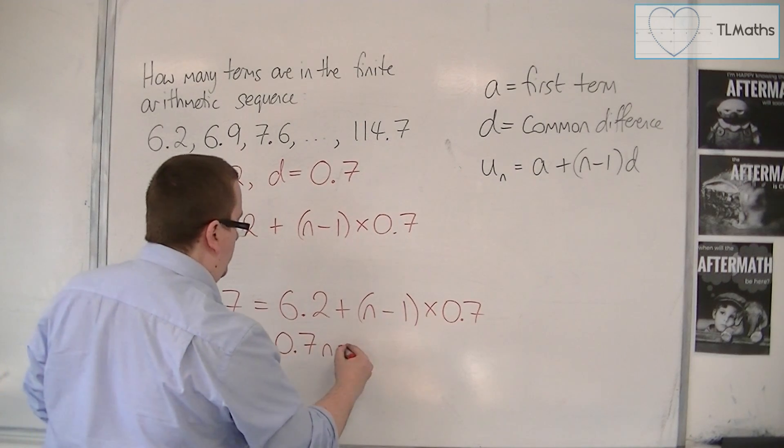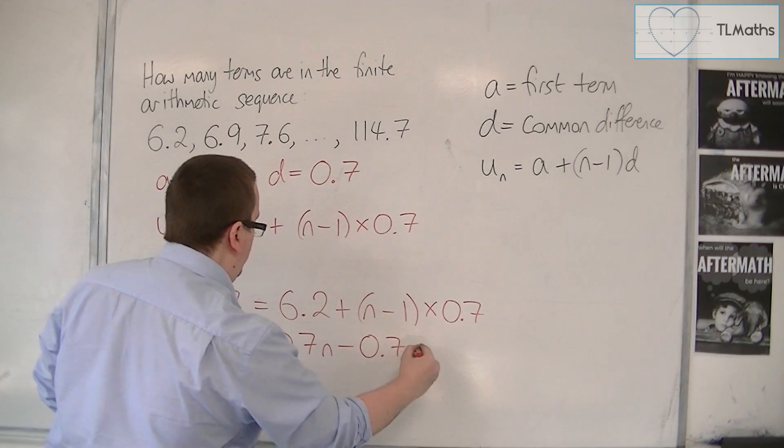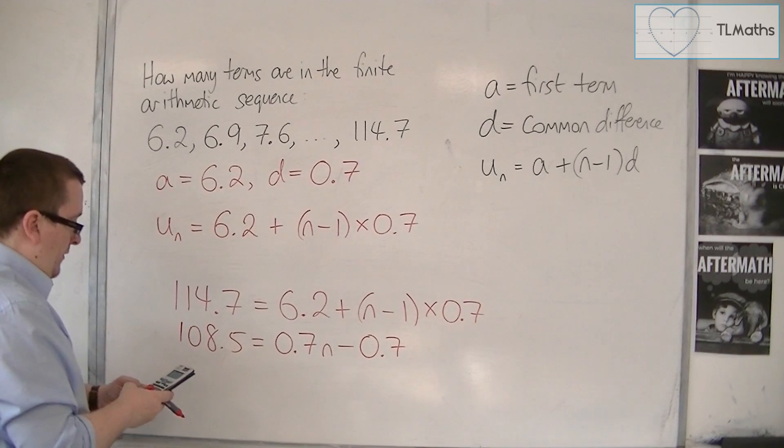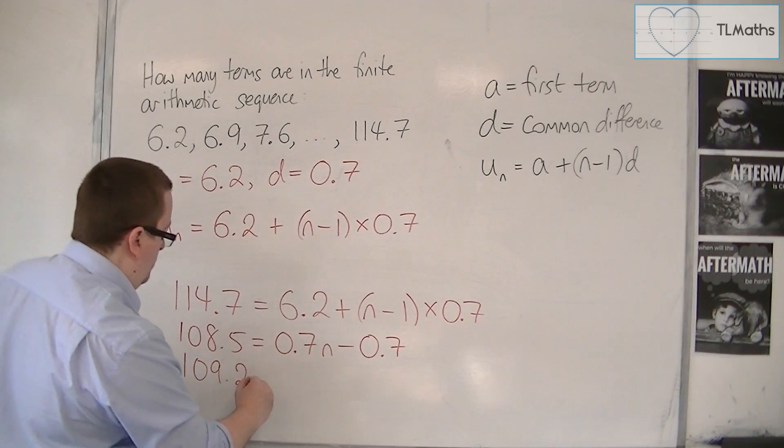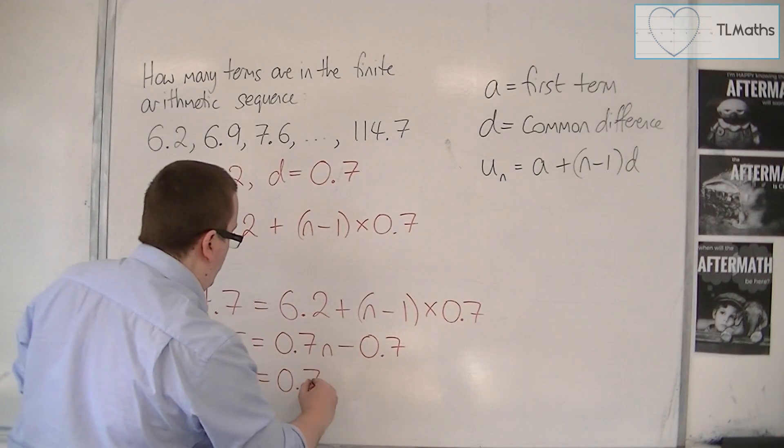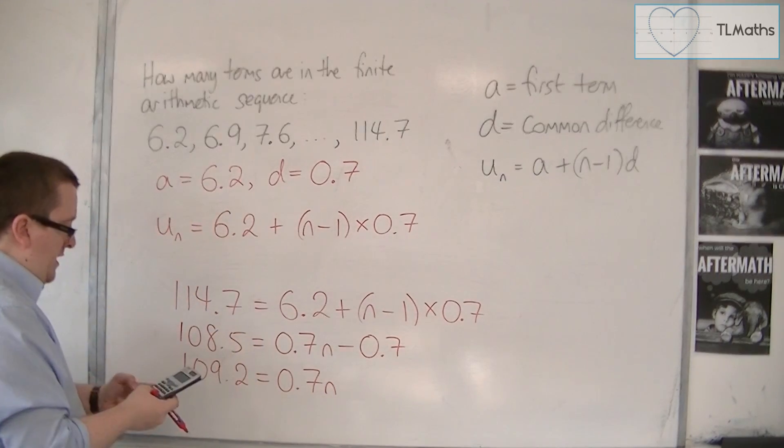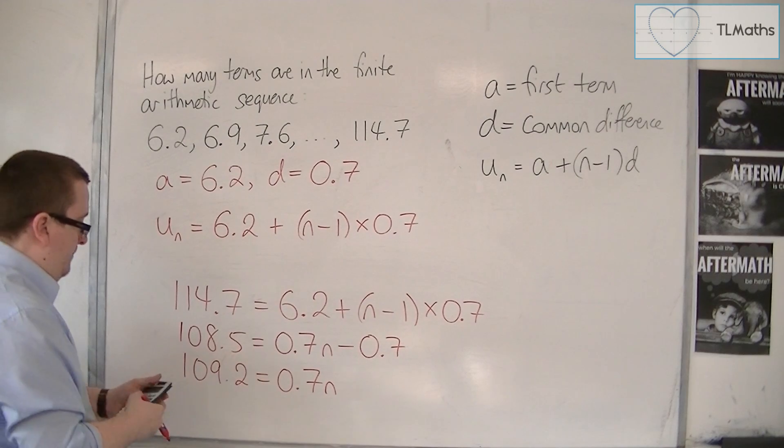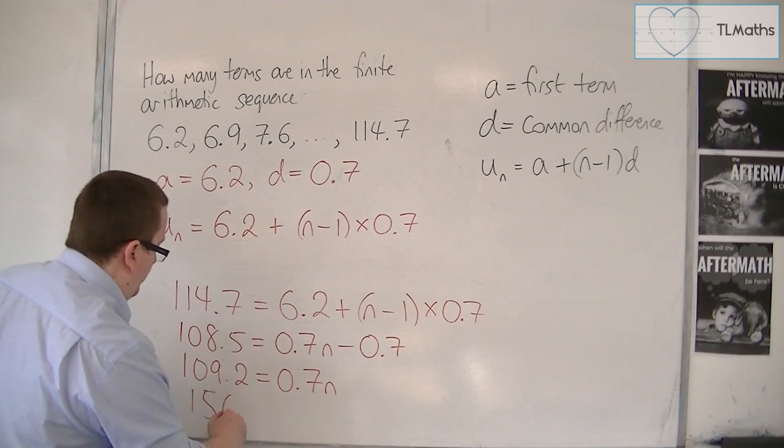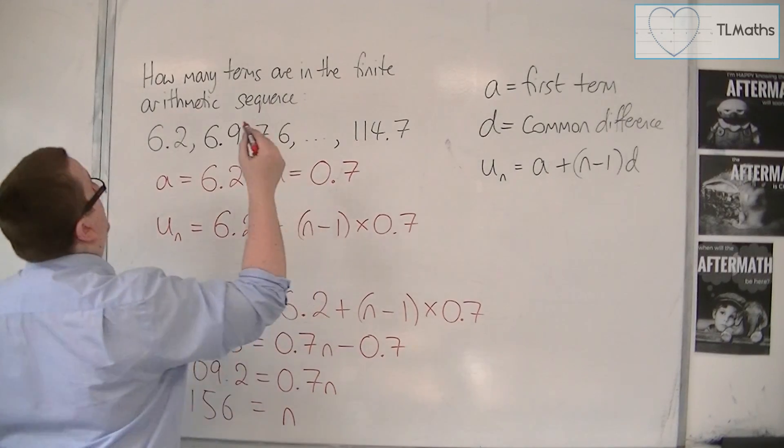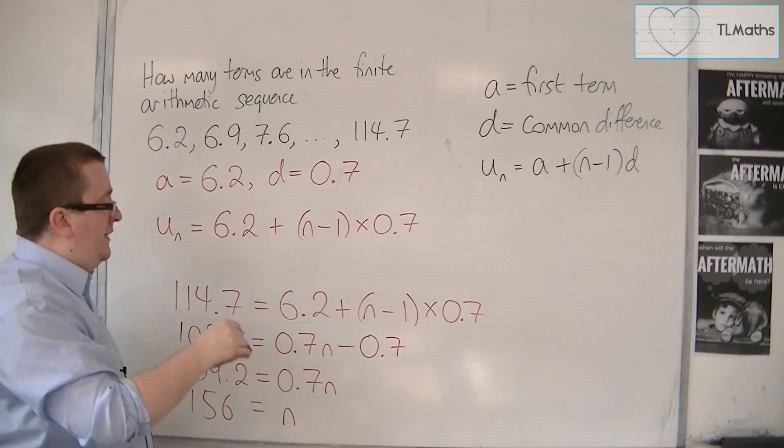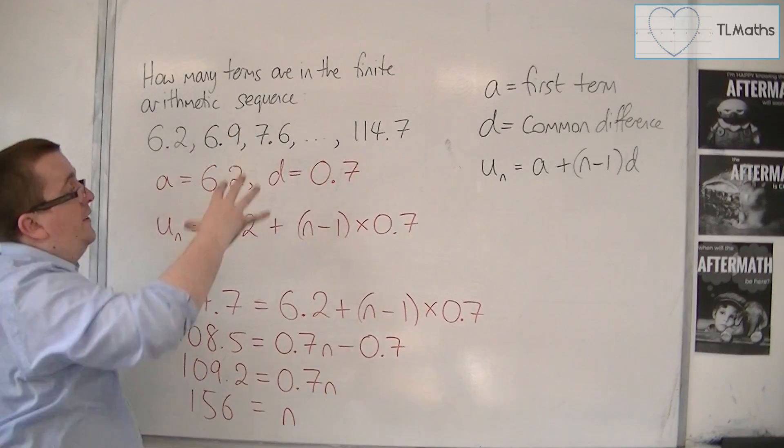I'm going to expand that bracket out, take away 0.7. So add 0.7 to both sides, we get 109.2 is equal to 0.7n. And then I can divide both sides by 0.7, and I get 156 is equal to n. And so the answer is that there are 156 terms in this sequence.